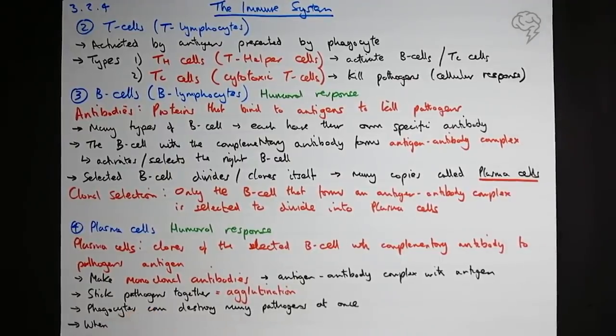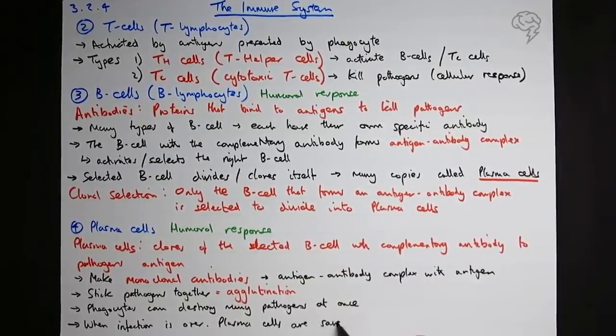Once the infection is over, then some of them are saved. When the infection is over, plasma cells are saved as memory cells, because you might well meet this pathogen again. Memory B-cells.